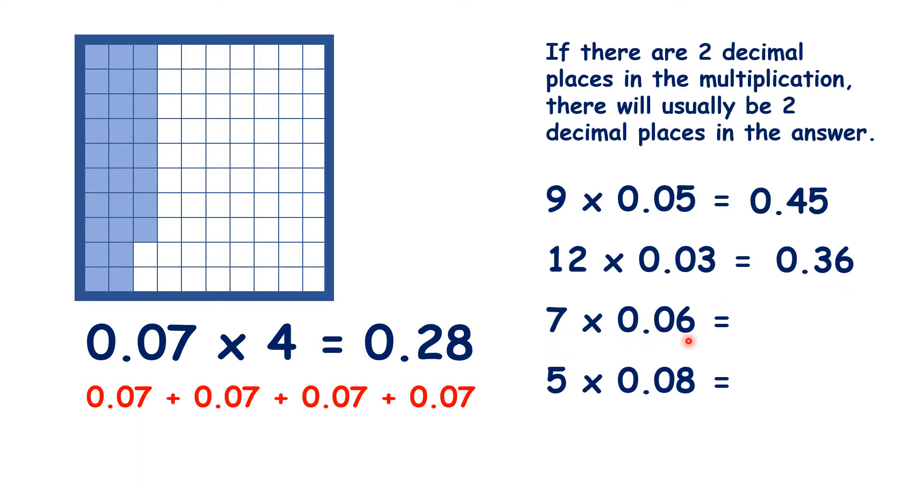7 times 6 is 42, so 7 times 0.06 is 0.42. And 5 times 8 is 40, so 5 times 0.08 is 0.40. But we know that 0.40 is usually just written as 0.4.